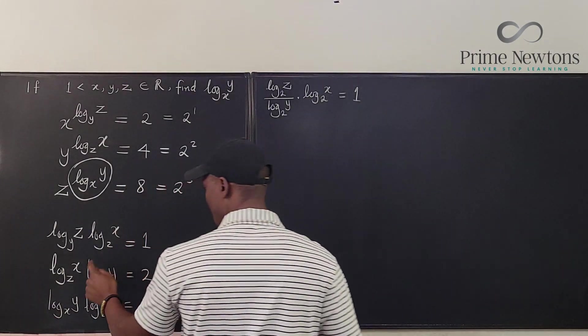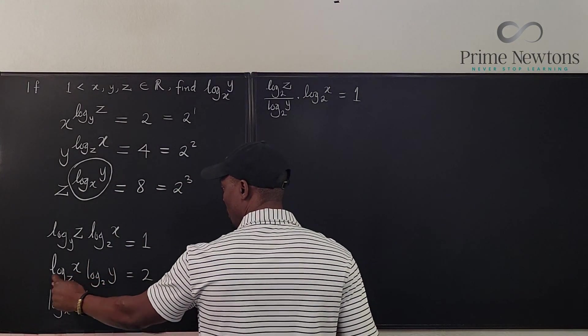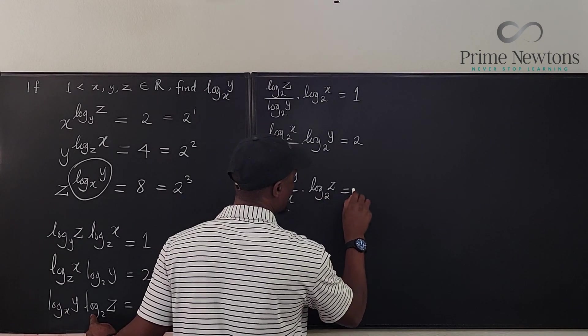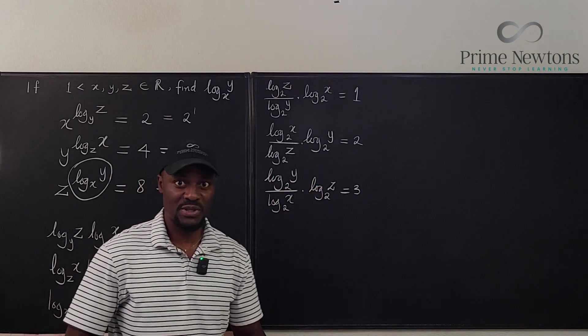Okay. So we do the same thing here. We're going to have log x base 2, log y base 2, log z base 2 and the answer is 3. So how does this help us?